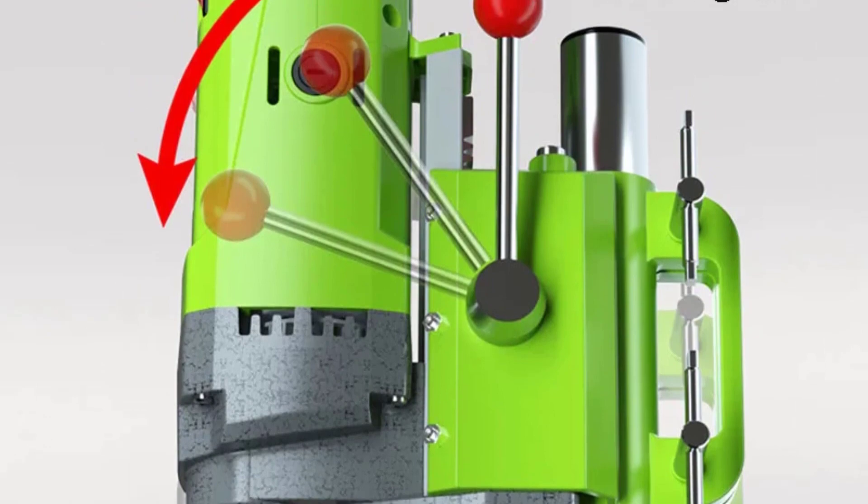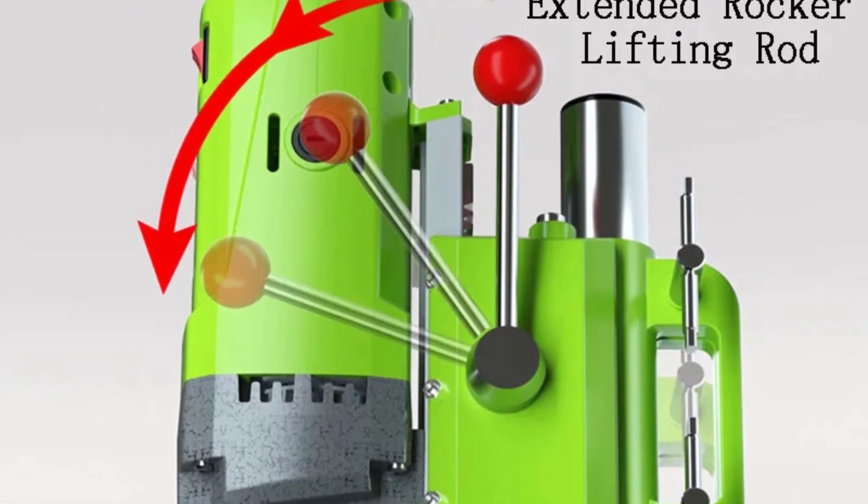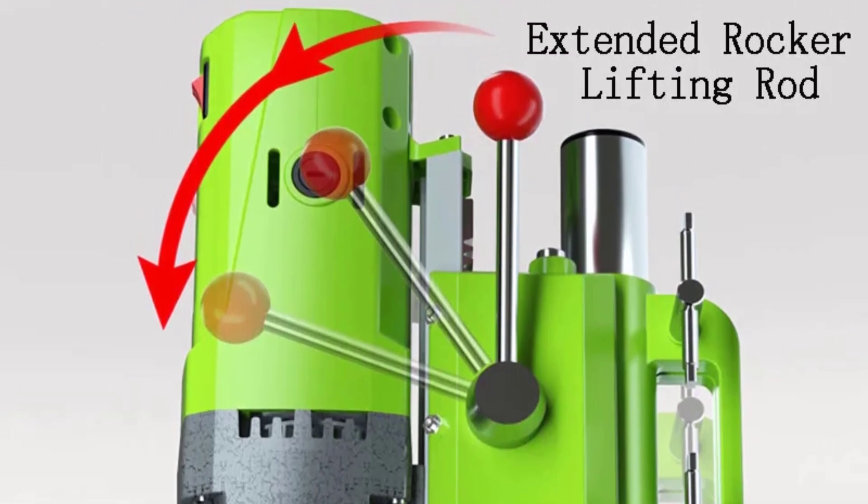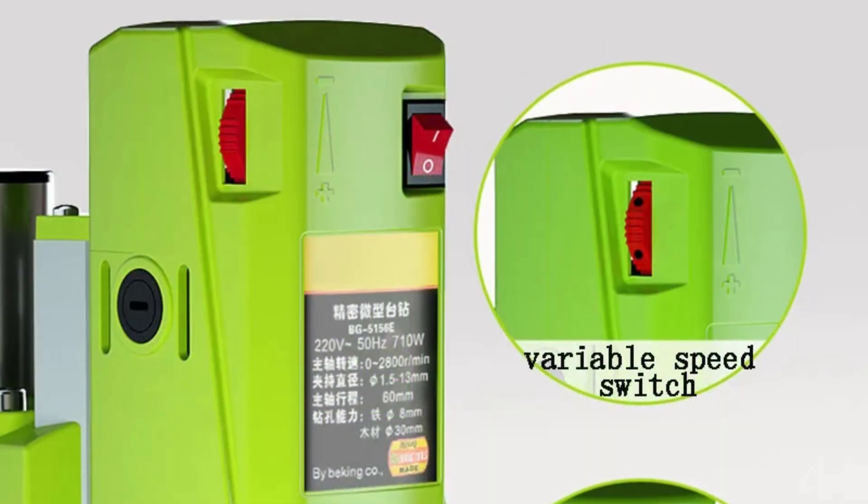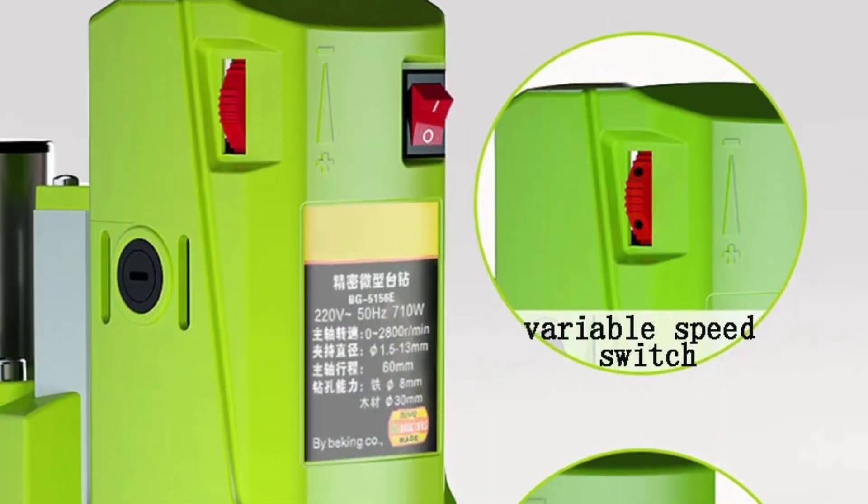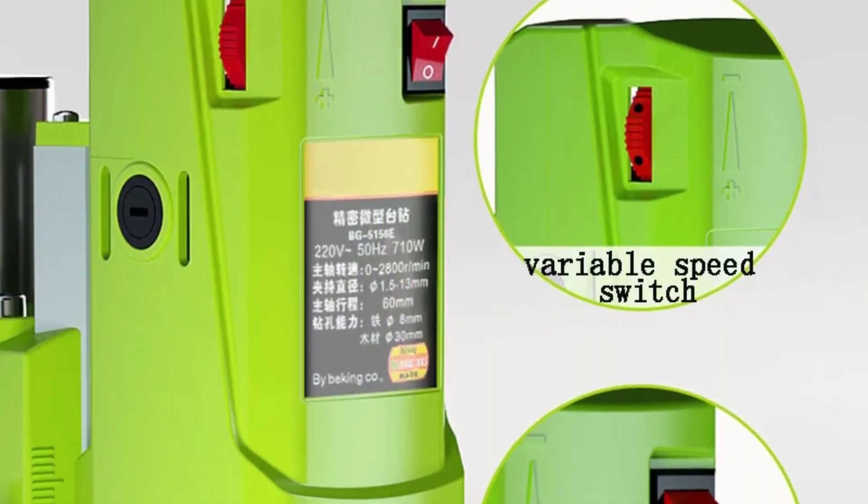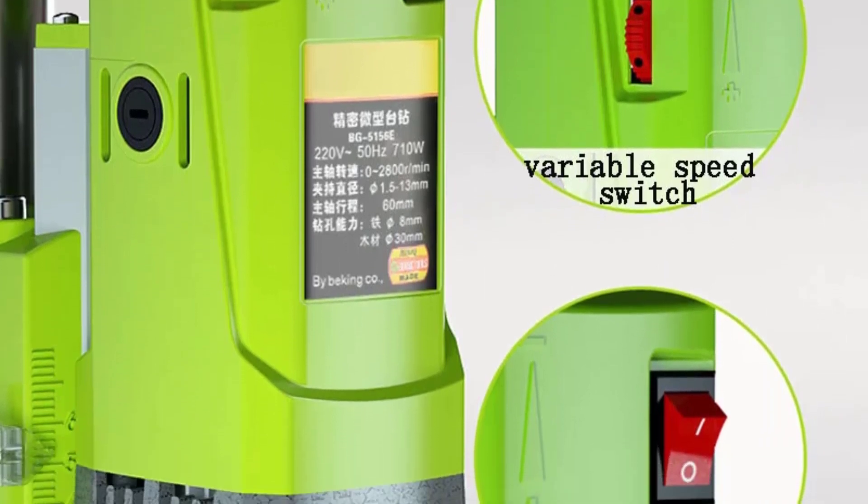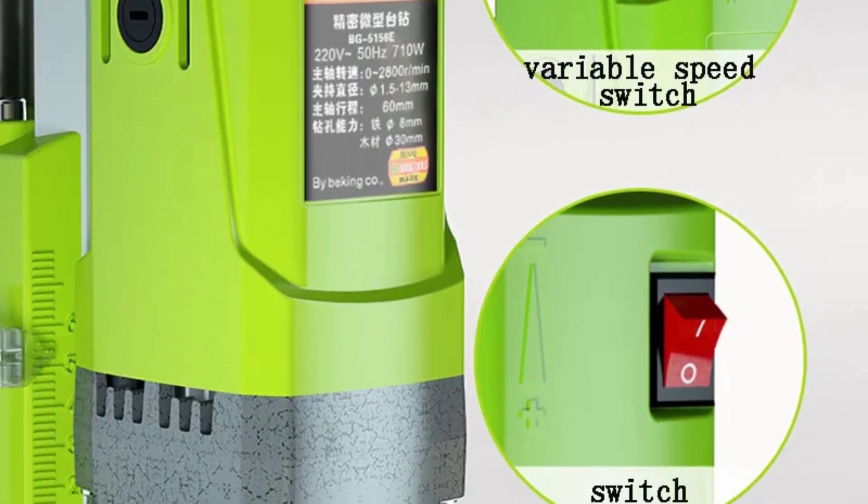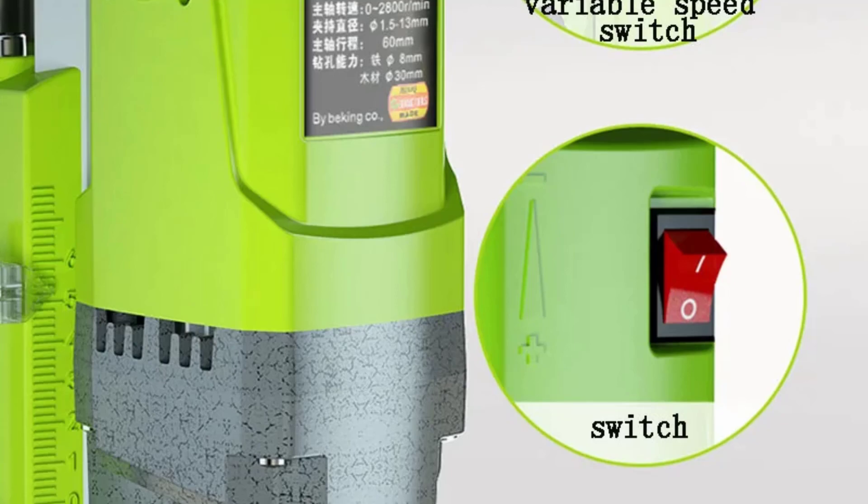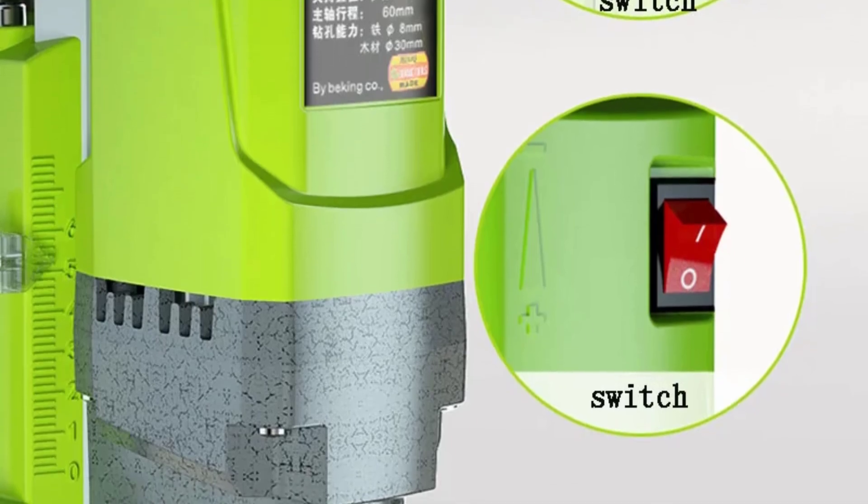What sets the XMS-JMNTZ apart is its impressive precision. The rated torque of 60mm and a maximum drilling diameter of 1-13mm make it suitable for a wide range of tasks. Whether you're working on intricate woodworking projects or drilling through tough metal surfaces, this mini drill machine handles it all with ease.